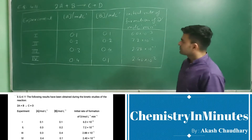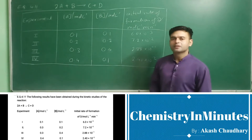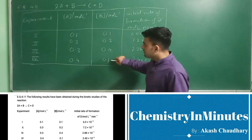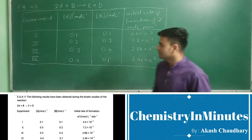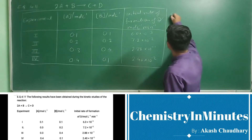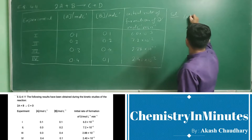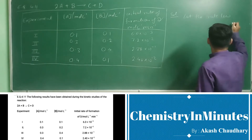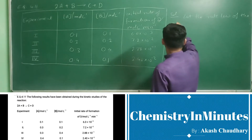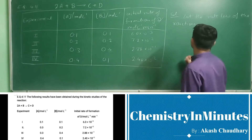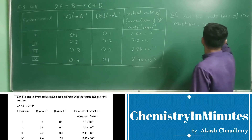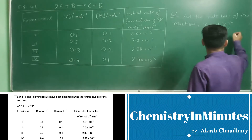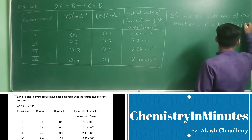We will determine the rate law and rate constant of the reaction from the given data. We compare experiments where the concentration of one of the reactants remains constant. Let the rate law of the reaction be: R₀ = k[A]^x [B]^y.